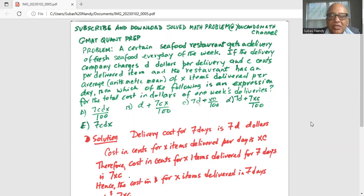Delivery cost for seven days is seven times D, which is 7D dollars. Cost in cents for X items delivered per day is XC. Therefore, cost in cents for X items delivered for seven days is 7XC.